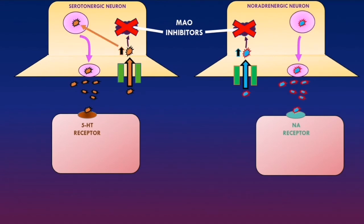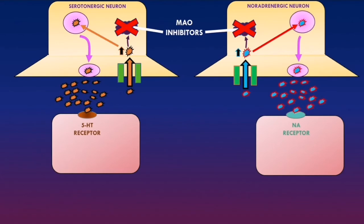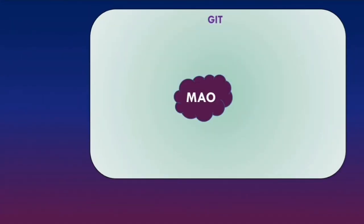Overall, MAOIs increase the availability of serotonin and noradrenaline in the synaptic cleft, helping with the symptoms of clinical depression based on the monoamine hypothesis. MAOIs also inhibit monoamine oxidase enzymes in dopaminergic neurons, increasing dopamine availability as well. In the GIT, monoamine oxidase enzymes are important for the metabolism of tyramine, a compound found in foods such as cheese, wine, and beer, and they normally break it down so it cannot be absorbed into the blood.